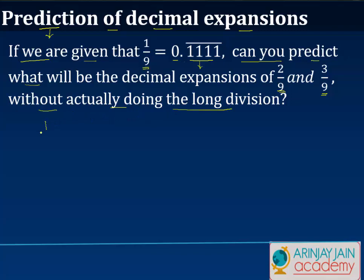Normally, what we could have done is divide 1 by 9 by performing the long division method. But in this case, you don't have to do the long division. Instead, you just predict the value of the decimal expansion given one of the answers or the hint provided to you.